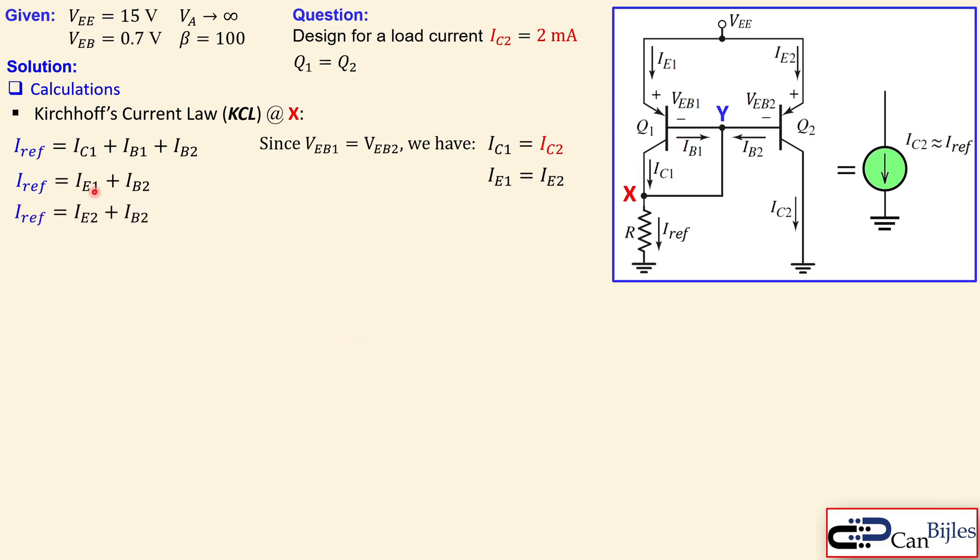So we can say the emitter current of Q1 is equal to emitter current of Q2. So IE1 is equal to IE2. But we know the emitter current is related to the base current by beta plus 1 times the base current. So this is the expression. We can now substitute that in this expression.